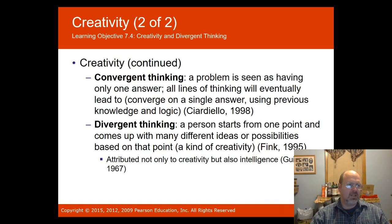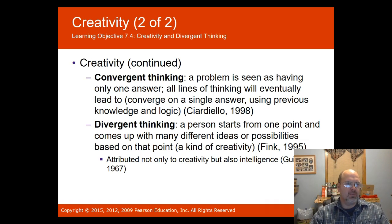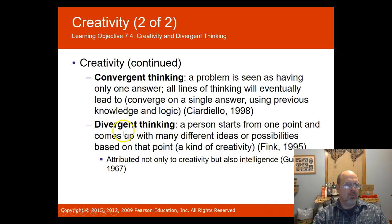Divergent thinking, on the other hand, is where a person starts from one point and comes up with many different ideas or possibilities (Think, 1995). Divergent thinking is attributed not only to creativity but also to intelligence (Guilford, 1967). In the movie Divergent, the divergent individuals were seen as a challenge or threat because they were creative and had many possibilities.